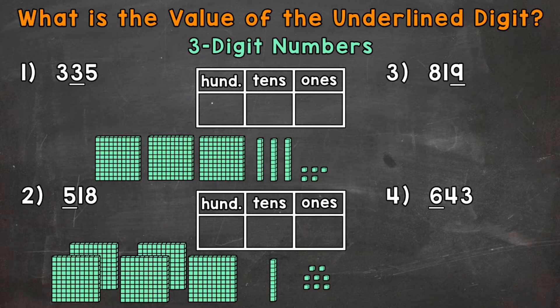So we have 335. A three in the hundreds place, a three in the tens, and a five in the ones. Now we specifically want to look at the three in the tens place. So that three represents three groups of ten.